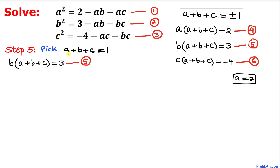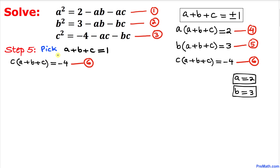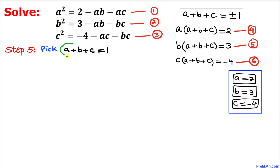For equation 5, substituting a + b + c = 1: b × 1 = 3, so b = 3. For equation 6: c × 1 = −4, so c = −4. Thus, when a + b + c = 1, our first solution is a = 2, b = 3, c = −4.